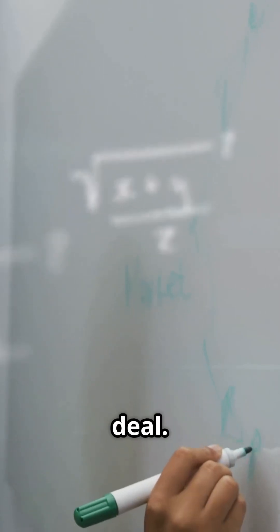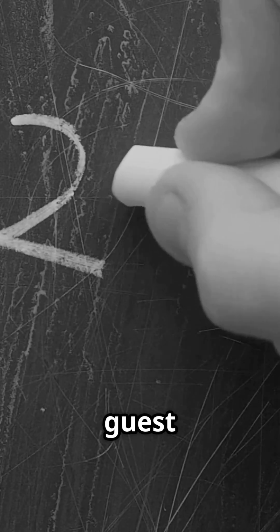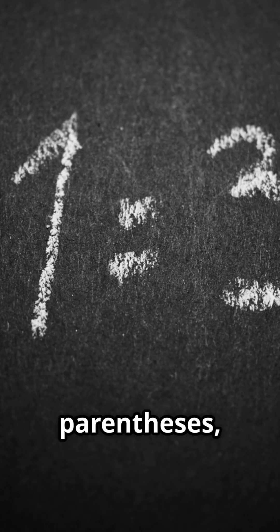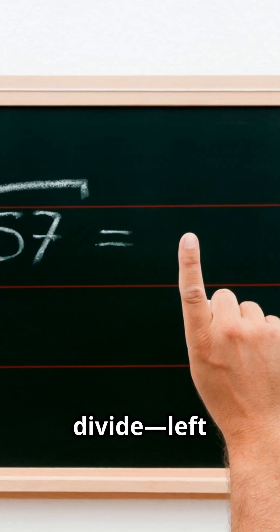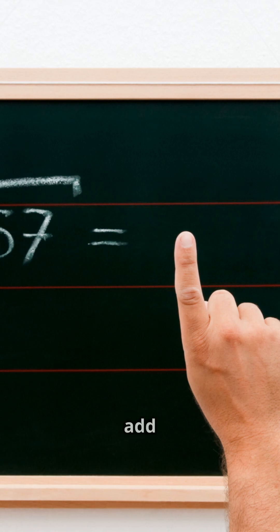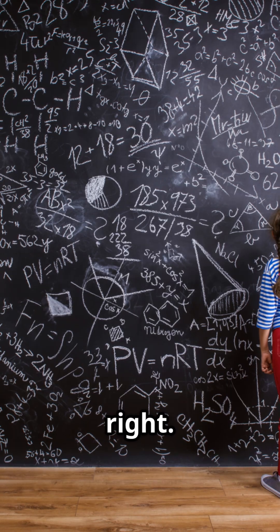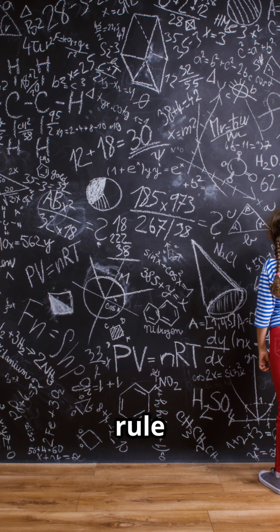When solving math problems, there's a VIP guest list called PEMDAS: P for parentheses, E for exponents, M and D for multiply or divide left to right, and A and S for add or subtract, also left to right. Think of it as the golden rule of math.